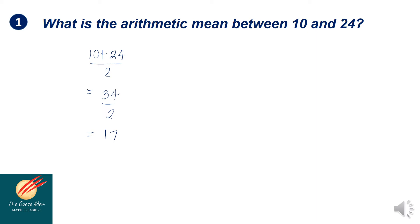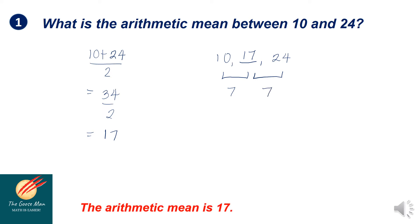To double-check our answer, we have 10, blank, and 24. If we insert 17 here, the difference between 10 and 17 should be the same as the difference between 17 and 24. Checking: 17 minus 10 is equal to 7, and 24 minus 17 is equal to 7. Therefore, the arithmetic mean is 17.